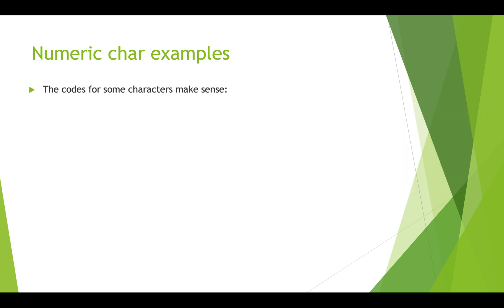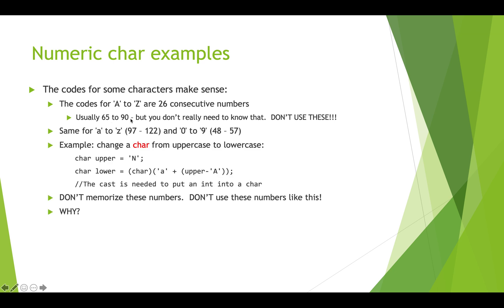These are examples of how you might use characters and integers in an interchangeable way and the code for some characters makes sense. The code for A to Z are 26 consecutive numbers from 65 to 90 if you've got ASCII. For small a to small z you've got 97 to 122 and the digits 0 to 9 are 48 to 57.